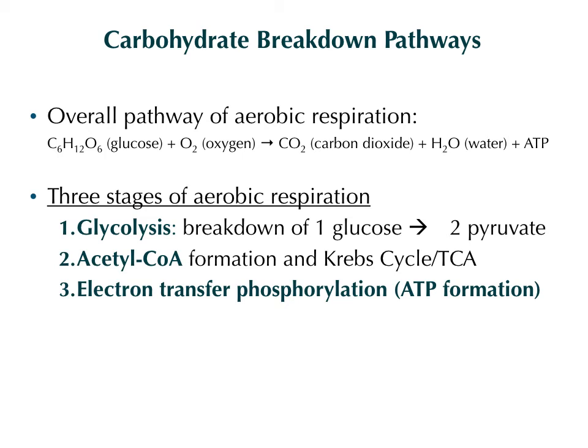Our pathway of aerobic respiration is going to take a molecule of glucose — C₆H₁₂O₆ — in the presence of oxygen, and the products formed will be carbon dioxide, our waste product that we blow off in respiration, water, and ATP. We'll examine the three stages of aerobic respiration. The first stage is glycolysis, which breaks down glucose into two three-carbon units of pyruvate. Then we acetylate that and form acetyl-CoA, which enters the Krebs cycle or tricarboxylic acid cycle inside the mitochondrion. The final stage will be the electron transfer phosphorylation or electron transport chain, and that's where we make the bulk of our ATP.